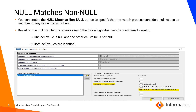Let's discuss about null matches non-null. You can enable the null matches non-null option to specify that the match process considers a null value as a match of any value that is not null. Based on the null matching scenario, the following value pairs are considered a match: when one cell is null and the other cell value is not null, and when both values are identical.